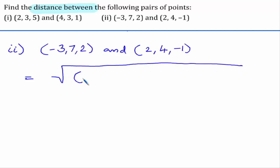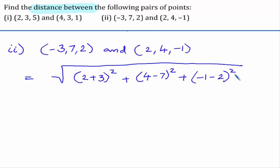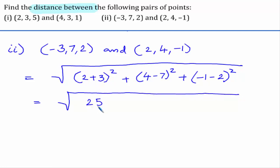The distance is the square root of (2 minus of minus 3, that is plus 3) whole square plus (4 minus 7) whole square plus (minus 1 minus 2) whole square. This gives us: 2 plus 3 is 5, square is 25; 4 minus 7 is minus 3, whole square is 9; and minus 1 minus 2 is minus 3, whole square is also 9. This gives us square root of 43 units.